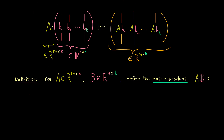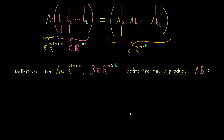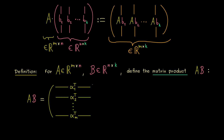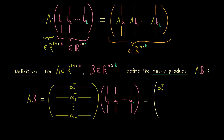We can also reformulate this definition, because we know the row picture from the last video. This means that the matrix-vector product can be interpreted by using the rows of A. More precisely, we give the rows of A names — we use alpha with an upper index t. By assumption the length of each row is the same as the length of each column in B. This implies that the inner product alpha1 with B1 makes sense, and indeed this should be the first entry of the new matrix AB.